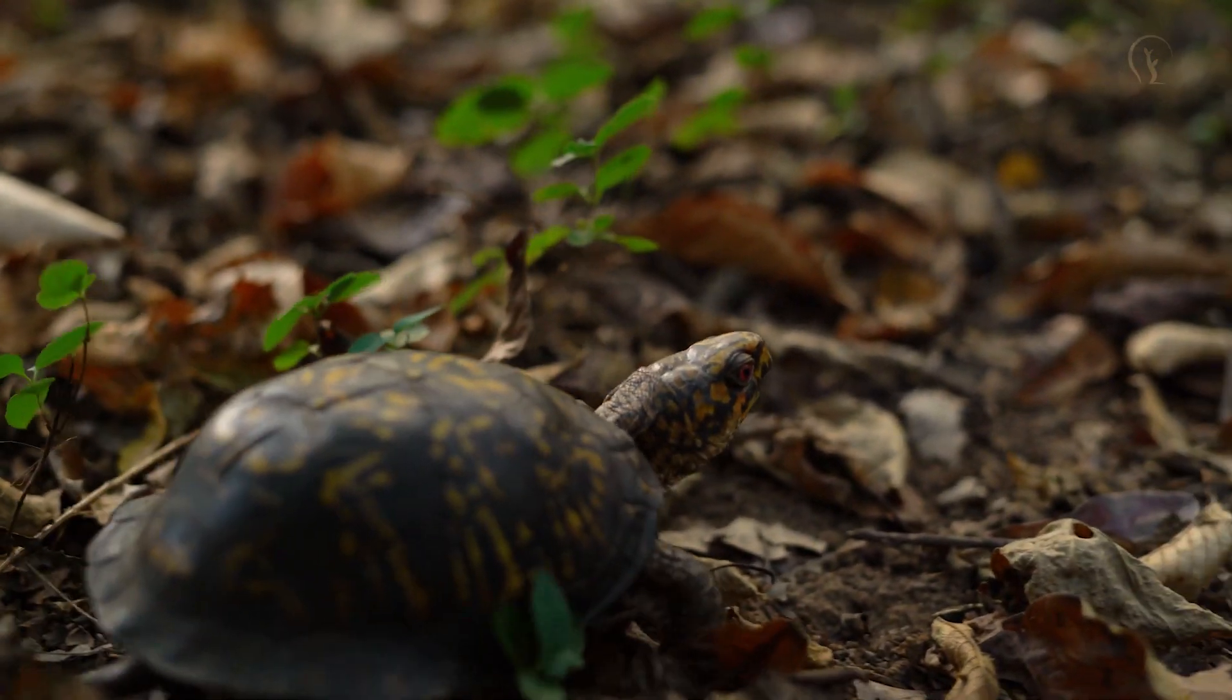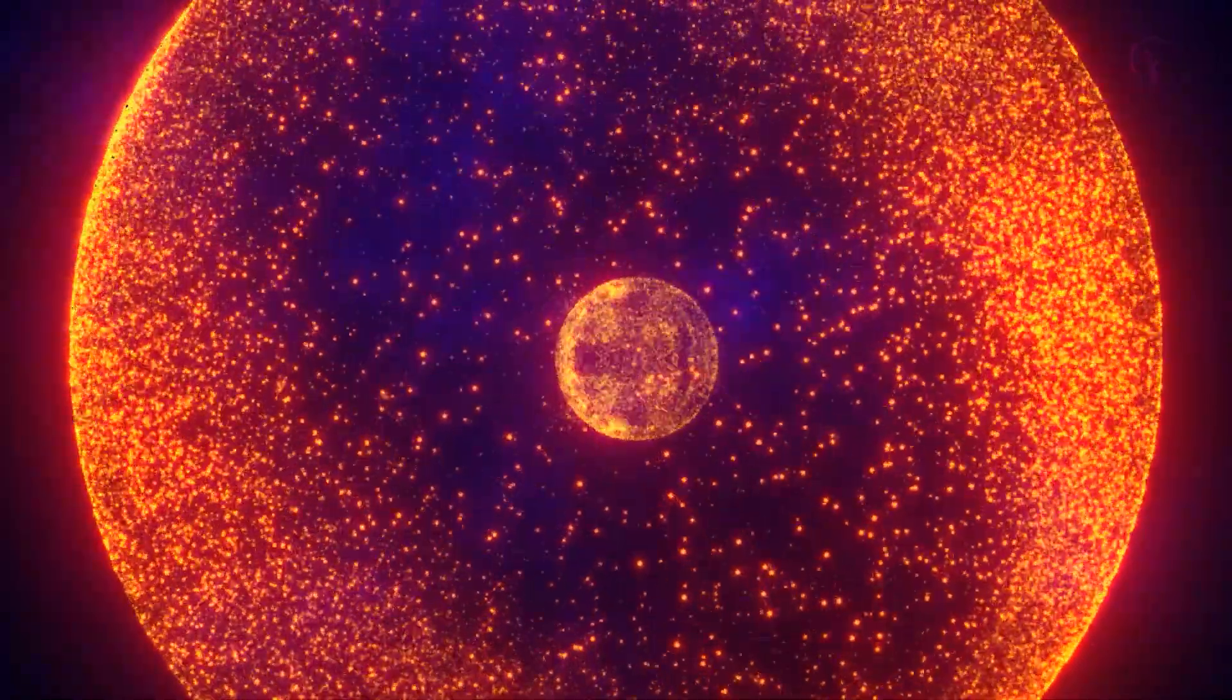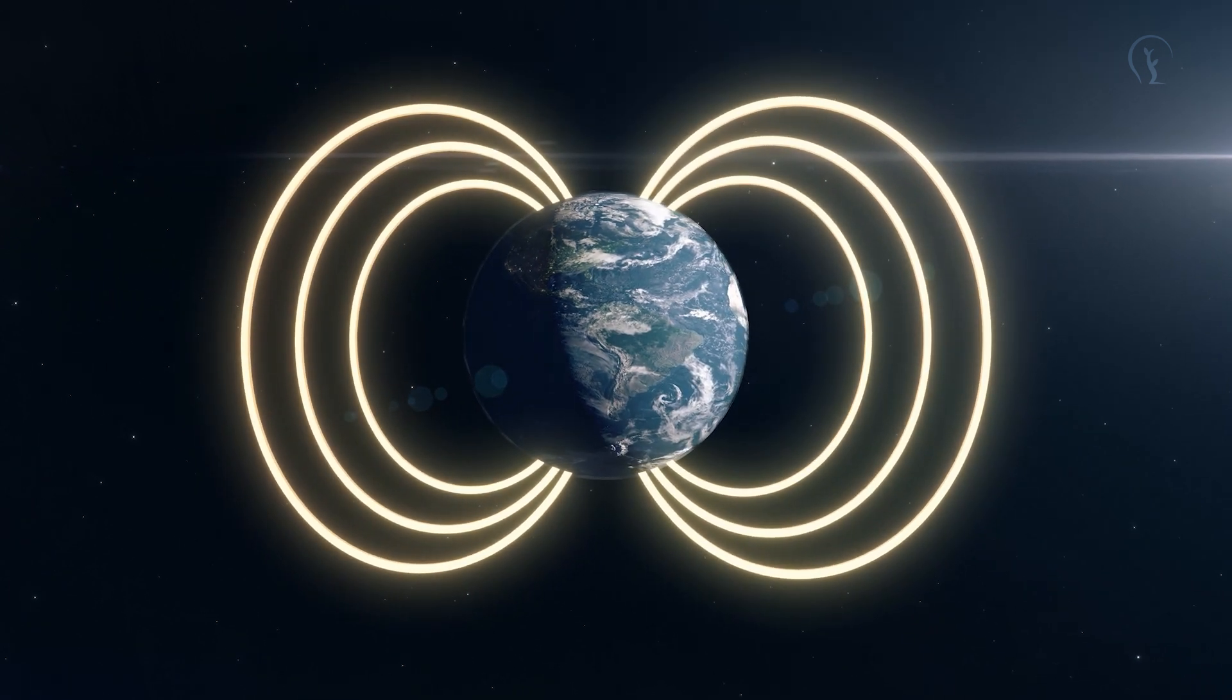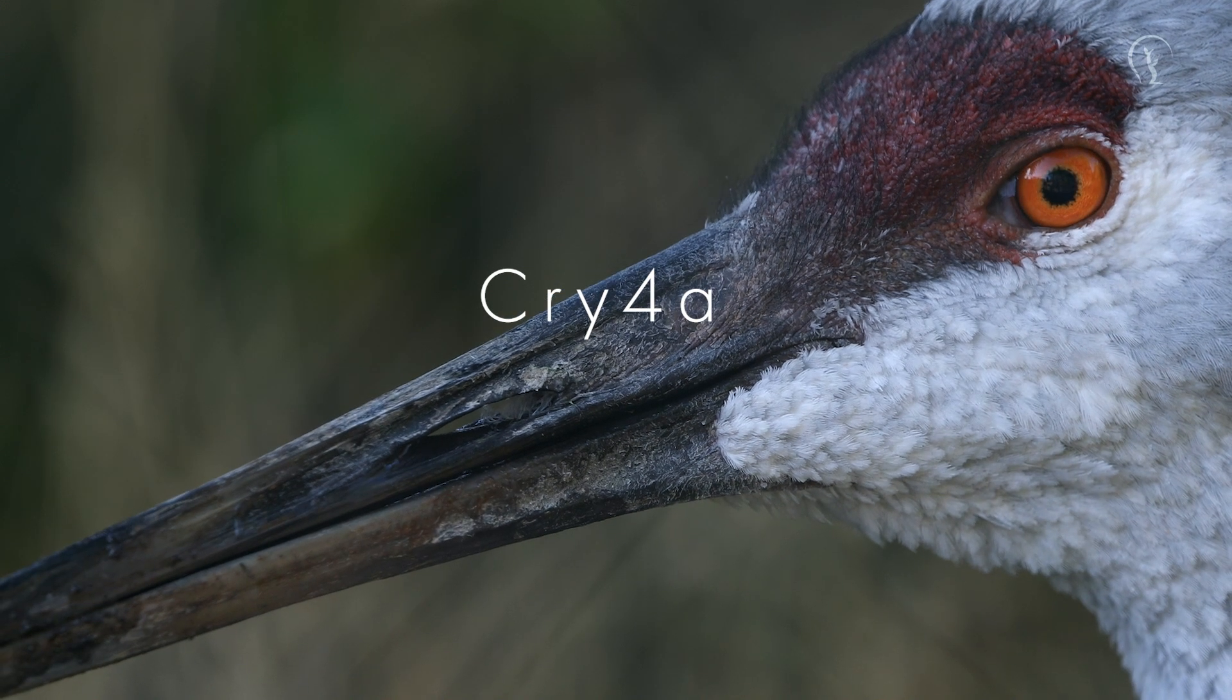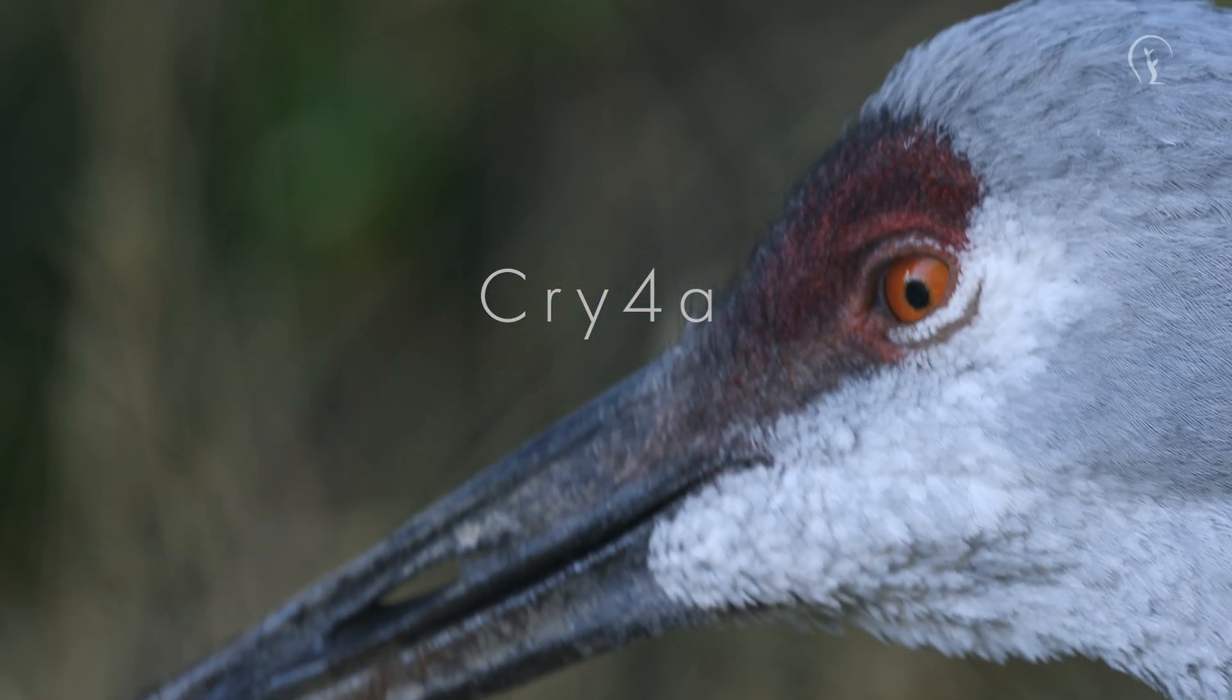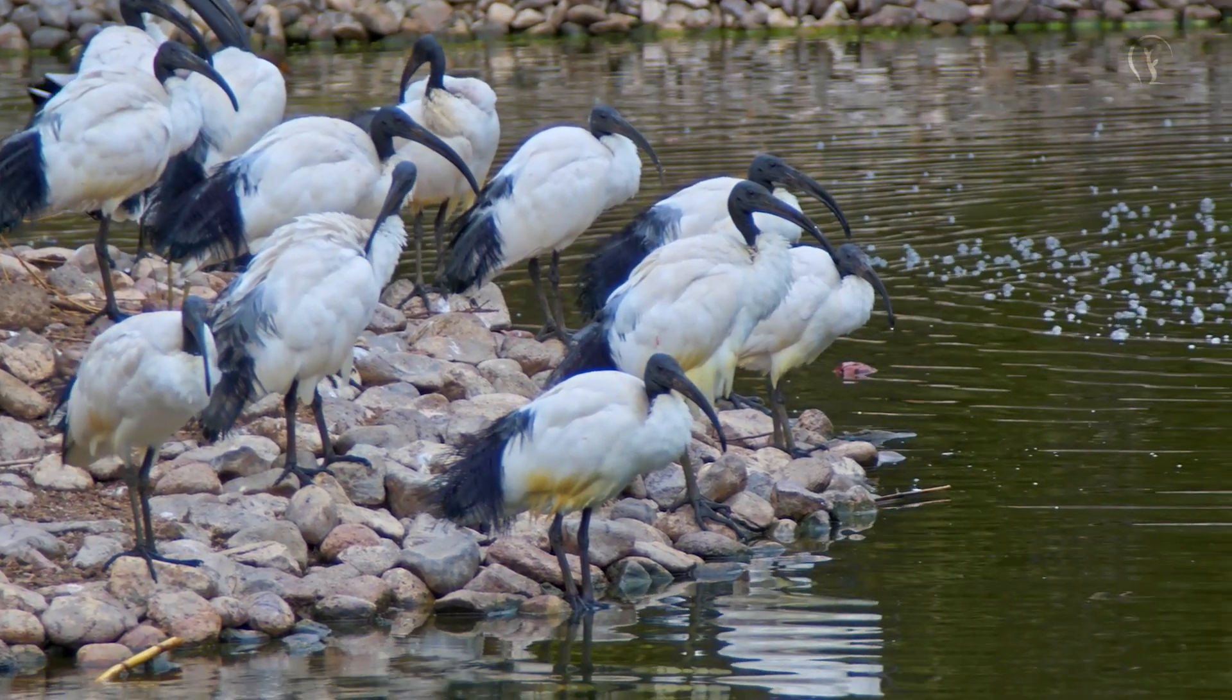When cryptochrome absorbs light, it triggers a chain reaction involving electron pairs. Incredibly, these electrons appear to be influenced by the Earth's magnetic field, subtly altering the chemical reaction. One specific variant, Cry4A, has been identified in the eyes of migratory birds. Researchers suspect that Cry4A may be at the heart of a quantum-based compass, allowing birds to detect magnetic fields through a mechanism governed by the principles of quantum mechanics.